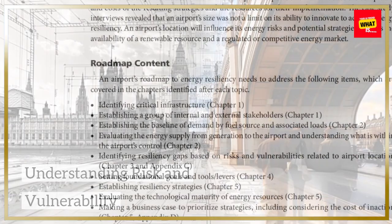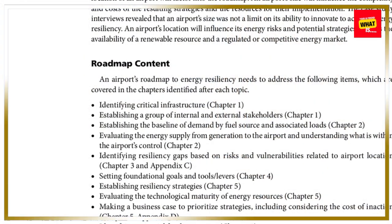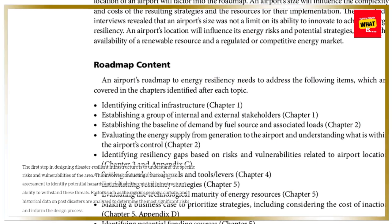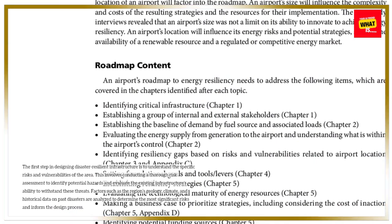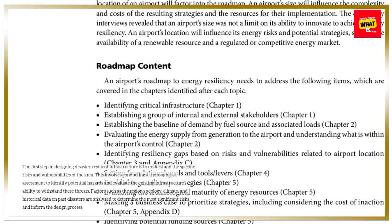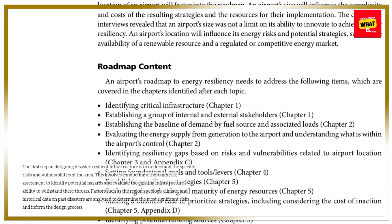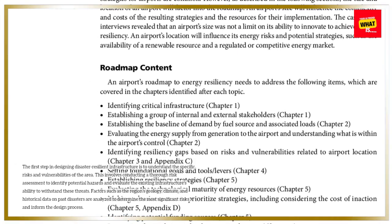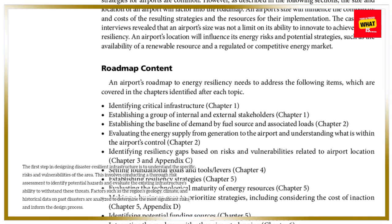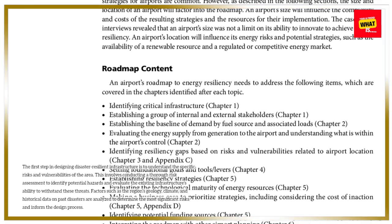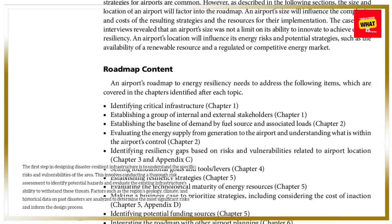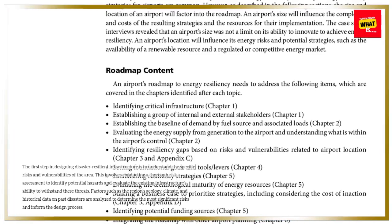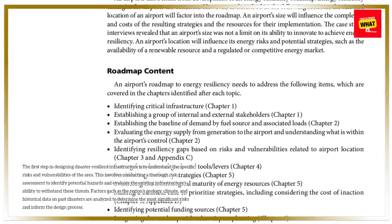Understanding Risk and Vulnerability. The first step in designing disaster resilient infrastructure is to understand the specific risks and vulnerabilities of the area. This involves conducting a thorough risk assessment to identify potential hazards and evaluate the existing infrastructure's ability to withstand these threats. Factors such as the region's geology, climate, and historical data on past disasters are analyzed to determine the most significant risks and inform the design process.